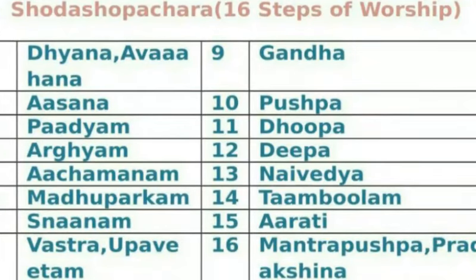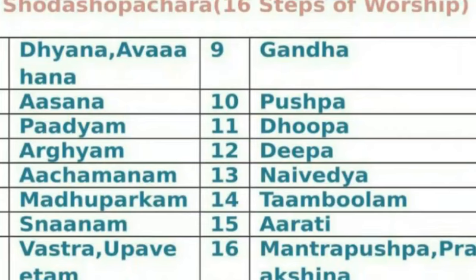These are all the 16 steps which we have to follow according to the Agama Shastra. It is called Shodachopachara for worshipping God to perform any Puja at our house. Treat the God as our guest and follow all these 16 steps. Keep watching my channel, subscribe my channel — I will present more good things to you. Thank you.